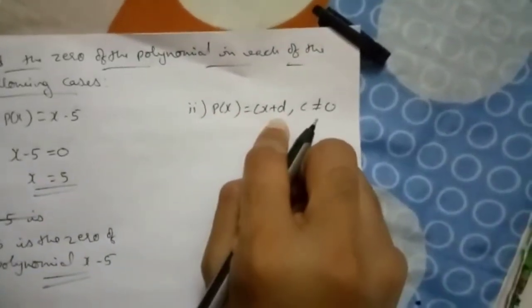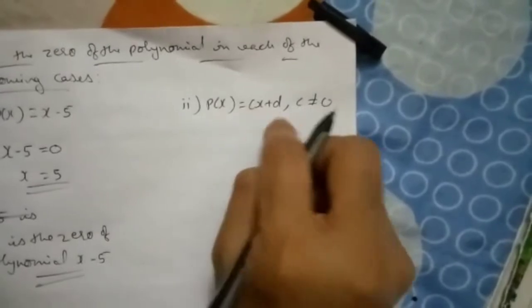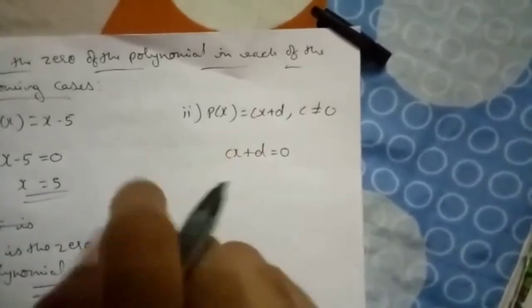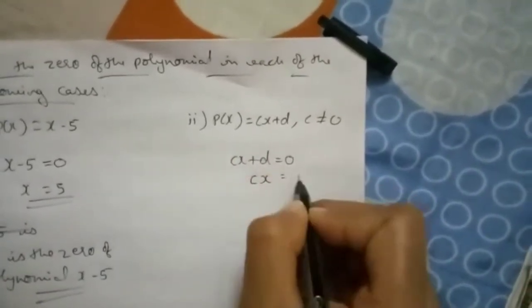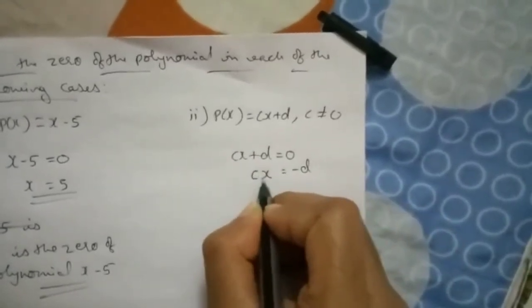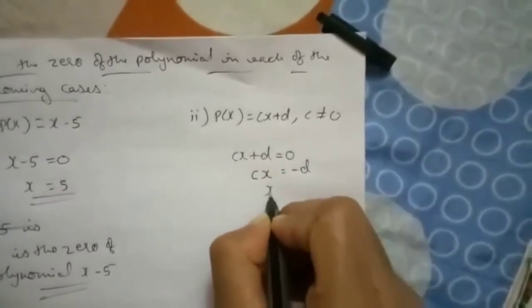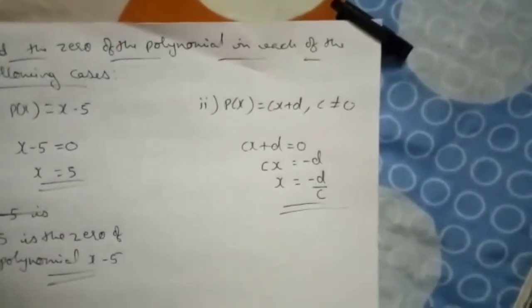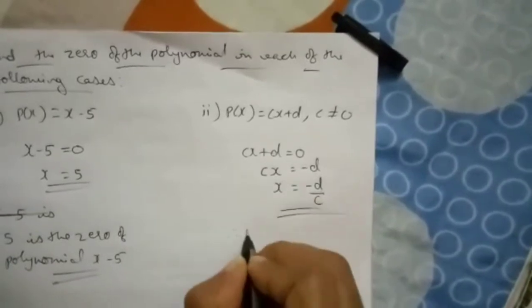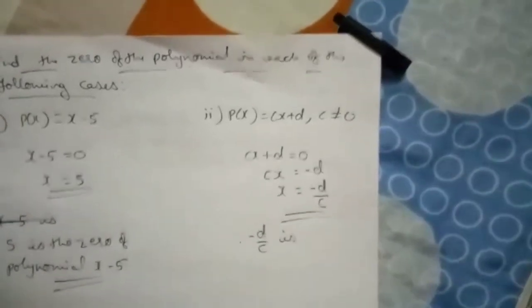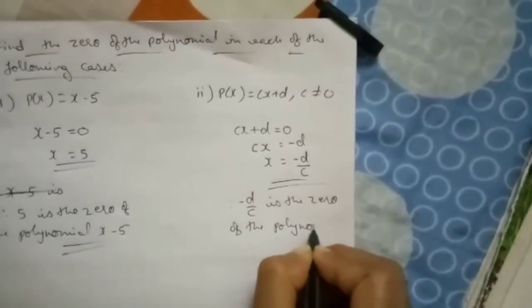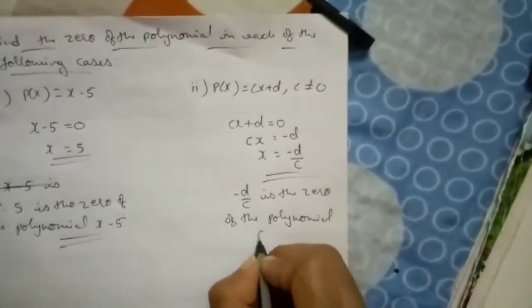Next, second question: p(x) equals cx plus d. We will equate it to zero. Take d to the other side so it becomes minus d. Then c is multiplied by x; taking it to the other side, multiplication becomes division. So x equals minus d by c. Therefore minus d by c is the zero of the polynomial cx plus d.